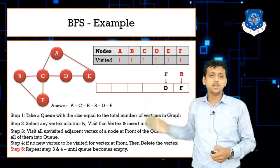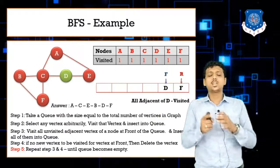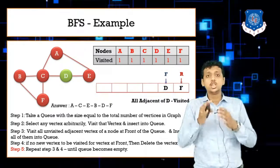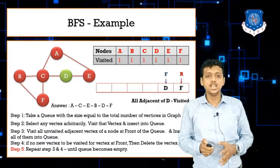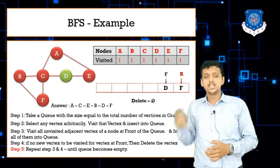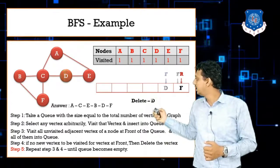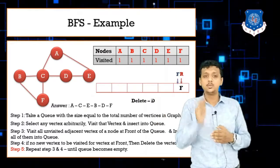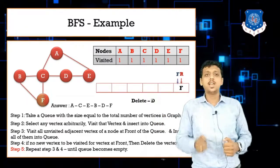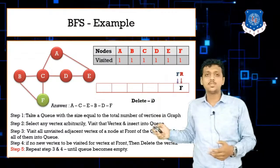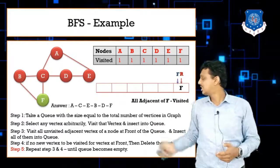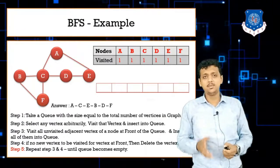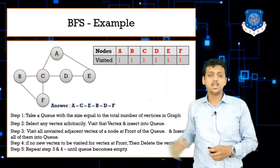After deleting B, the front pointer is at D. All adjacent nodes of D are already visited, so we delete D. Then only F remains — the front and rear both point to F. All of F's adjacent nodes are visited, so we delete F. The queue is now empty.